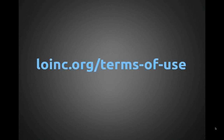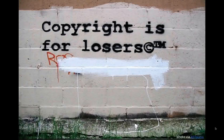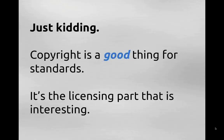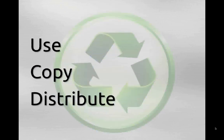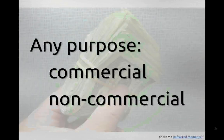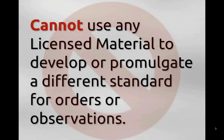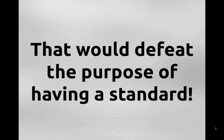LOINC is distributed under a license where copyright actually protects its integrity. LOINC is available at no cost worldwide forever. What you can do with it is use it, copy it, and distribute it for any purpose — both commercial and non-commercial. Essentially, the only thing you are prohibited from doing is using the licensed material to develop or promulgate a different standard for orders or observations, the space that LOINC is in, because that would defeat the entire purpose of having a standard.